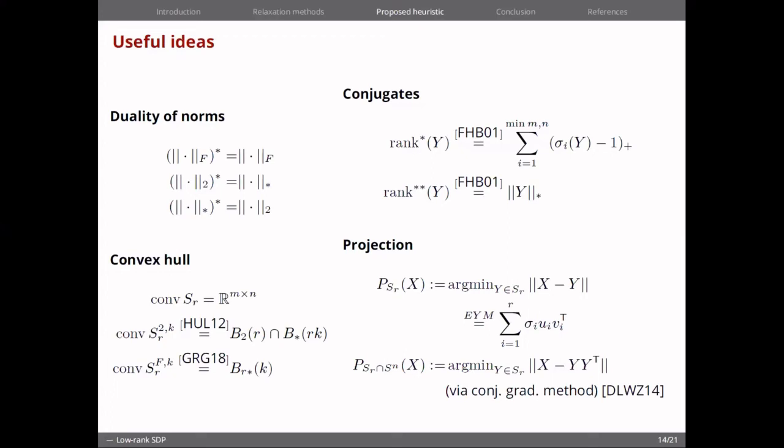And we can also have more complicated projections, for example, this one below, in which we want to maintain both low rank and also positive semi-definite. And this type of problem is handled via conjugate gradient methods, which is nice because this is going to be computationally not very expensive. And this is a key component in our proposed heuristic.